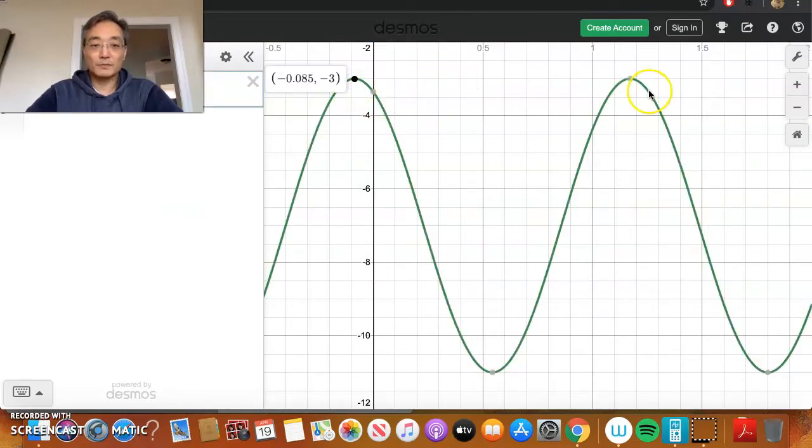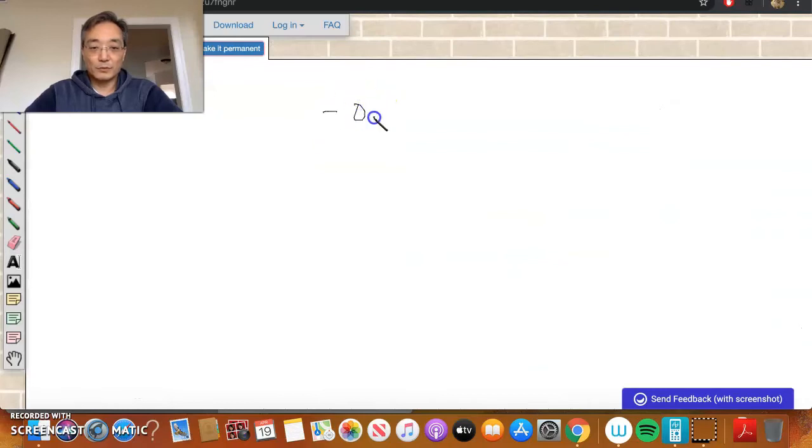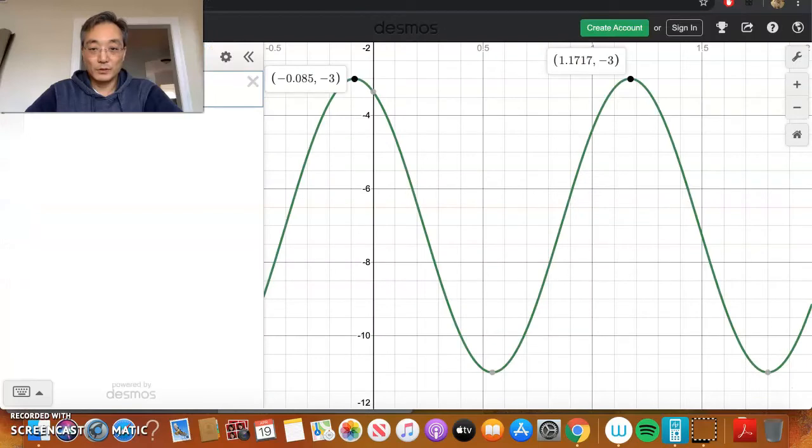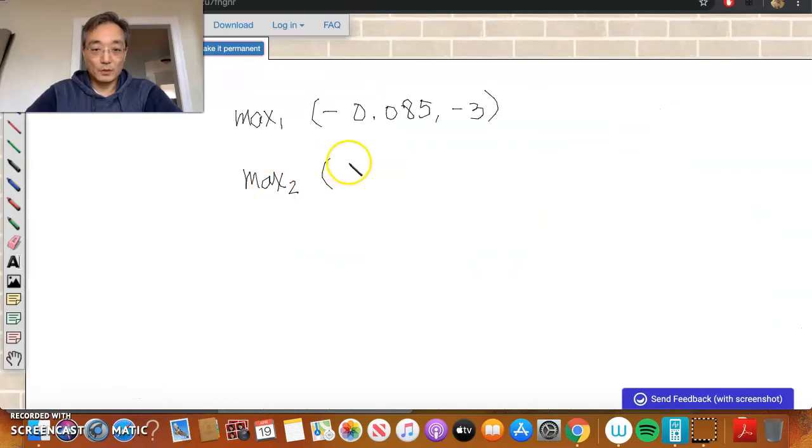So, if I took a couple of points, a couple of these maximum values, correct? I have negative 0.085, negative 3. So, negative 0.085, negative 3. I'm going to call that max 1. And let me take another maximum value, max 2, which is here, 1.1717, negative 3. So, 1.1717, negative 3.